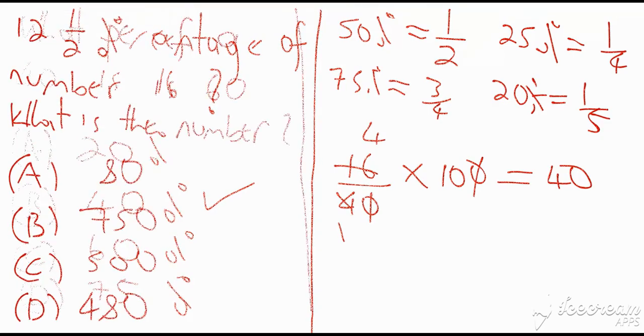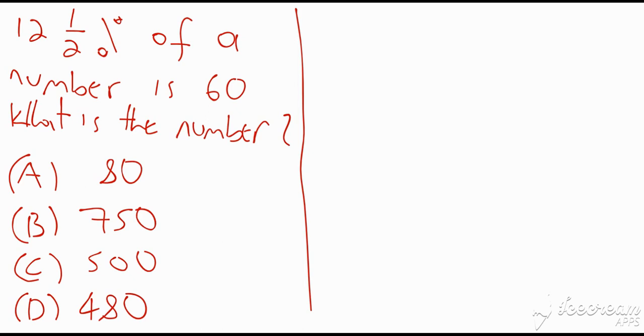Here is our second example guys: 12 and a half percent of a number is 60, what is the number? Now 12 and a half might seem like a very complex percentage, but look at this: 12 and a half is really half of 25%. Bear in mind that 25% is equivalent to a quarter. Now half of 25% is actually 12 and a half percent, which means that I'm gonna have to have a quarter, which is gonna give me one-eighth. So what the question is really saying is that if I divide this number that I don't know into eight parts, one part would be 60.